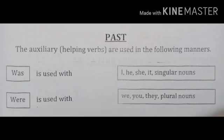Past. The auxiliary helping verbs are used in the following manners. 'Was' is used with I, he, she, it, and singular nouns. 'Were' is used with we, you, they, and plural nouns.